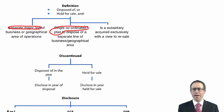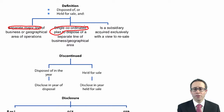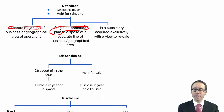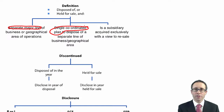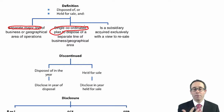Alternatively, it could still be a discontinued operation if you buy a subsidiary and your intention is to buy it and then sell it in the near future. If that's the case, it's held for sale and it is a subsidiary that you are looking to resell, and therefore it will be disclosed separately. However, the focus tends to be on the separate major line of business as part of a single coordinated plan.